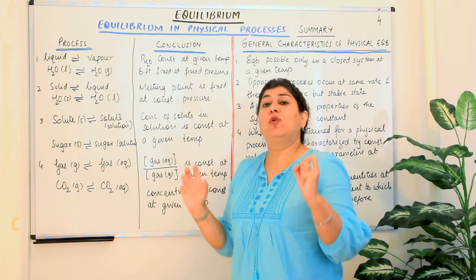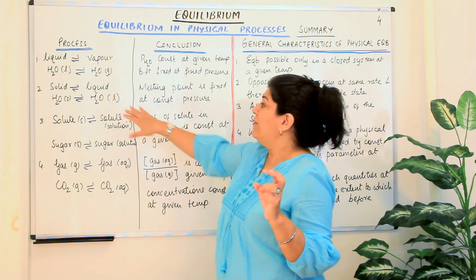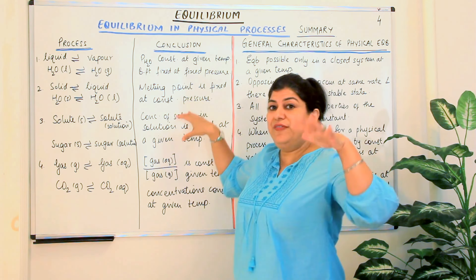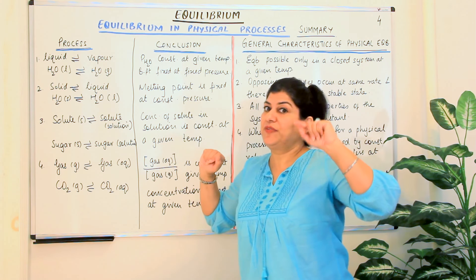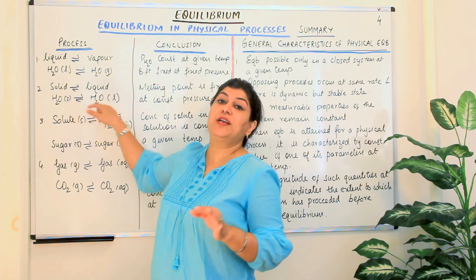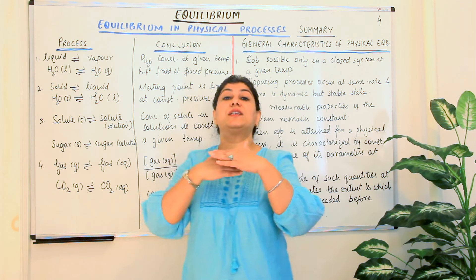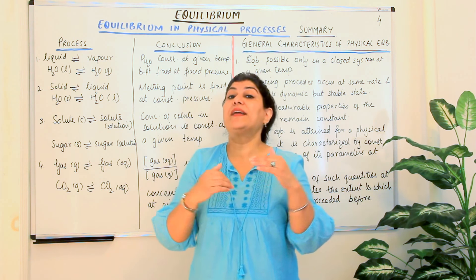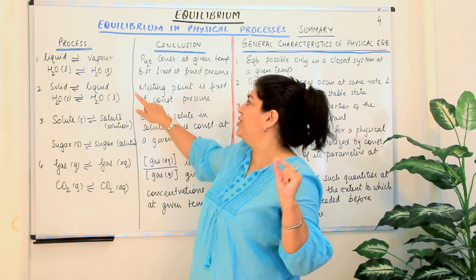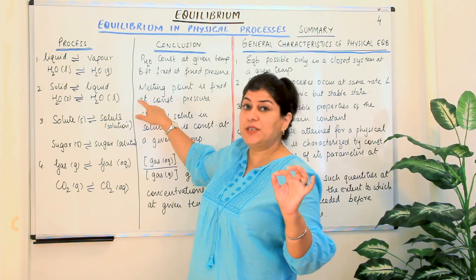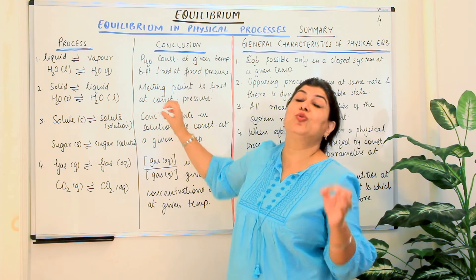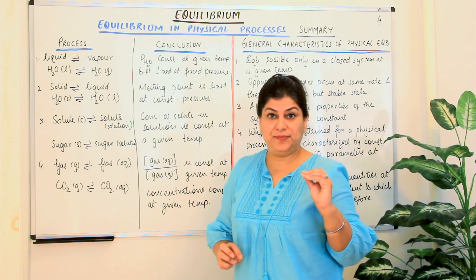What do we know about this equilibrium? If we keep the pressure at one atmospheric pressure, the temperature at which the solid and the liquid state acquire equilibrium will be a fixed temperature for that particular substance, and that temperature is known as its melting point.